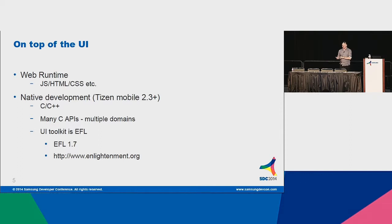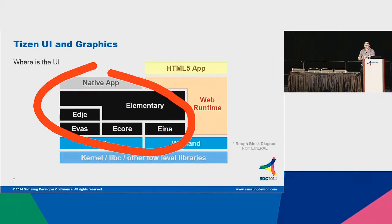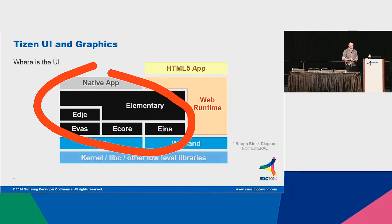The UI toolkit is EFL, version 1.7, and the original upstream project is at enlightenment.org. It sits pretty much in the middle of the stack. Even the web runtime itself depends on EFL to get stuff onto the screen, or to get input from input devices and so on.